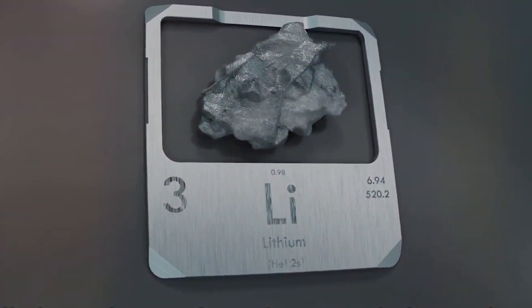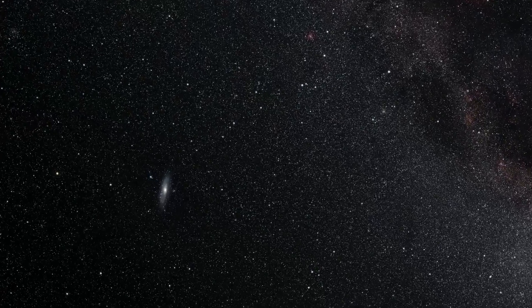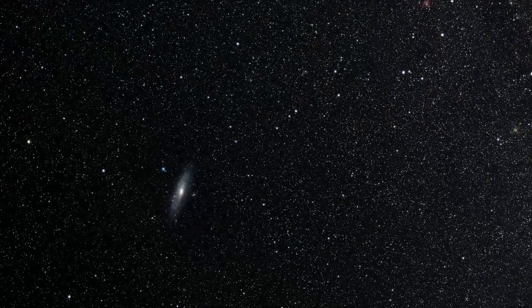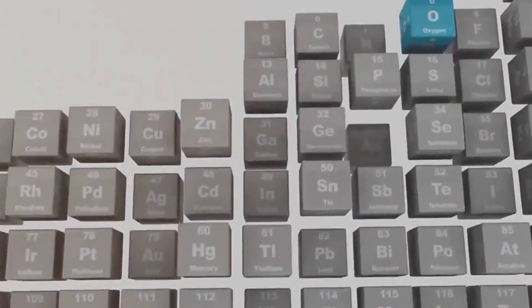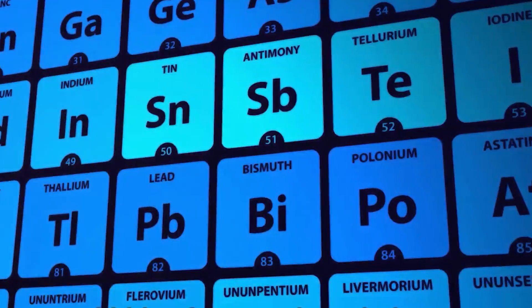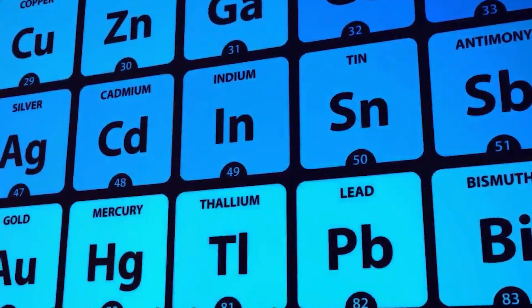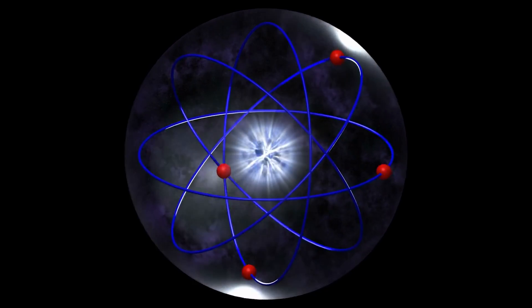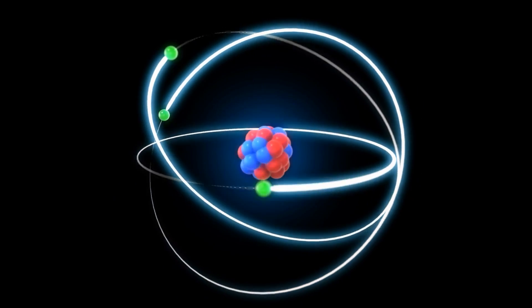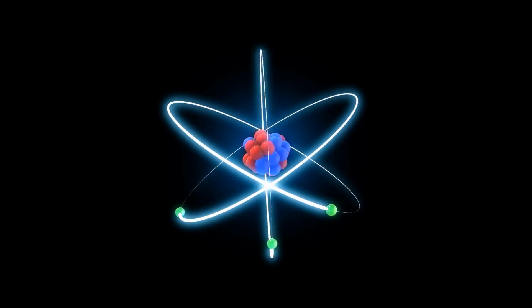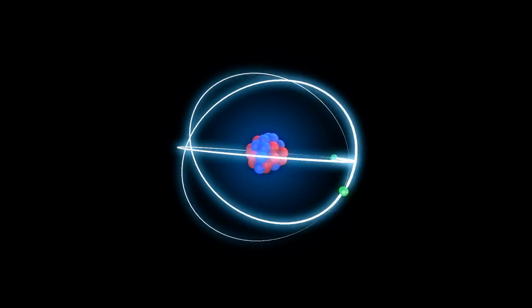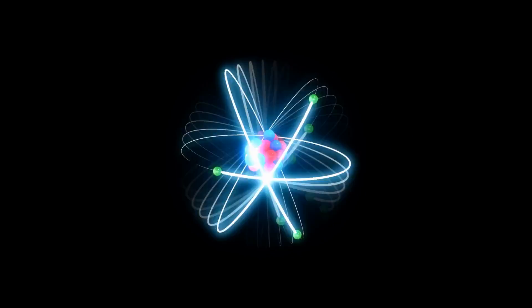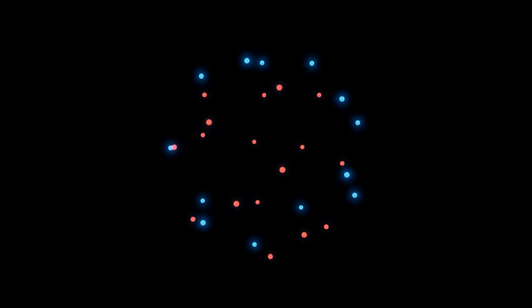Science fiction often envisions artificial or undiscovered elements with remarkable characteristics that might drive our future into the stars. However, for those familiar with chemistry, this idea seems unlikely. The elements on the periodic table are defined by their atomic number, the number of protons in the nucleus. So how could there be room for new elements? Yes, we could theoretically keep adding protons to the highest atomic numbers, but those elements tend to be extremely unstable and not useful for something like building warp drives.